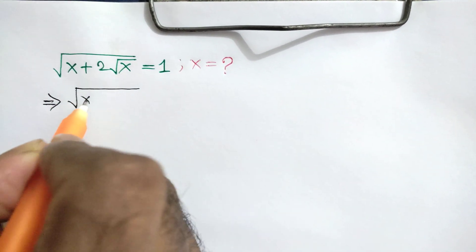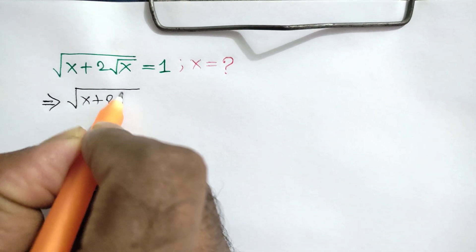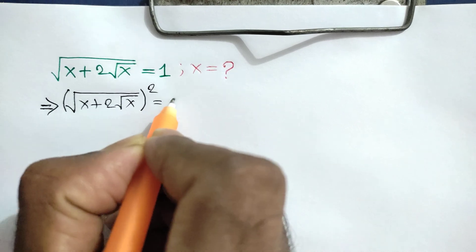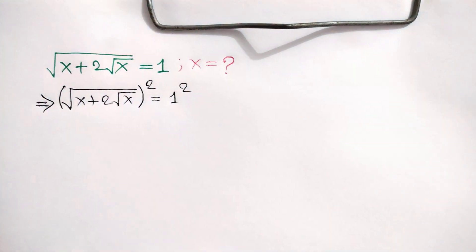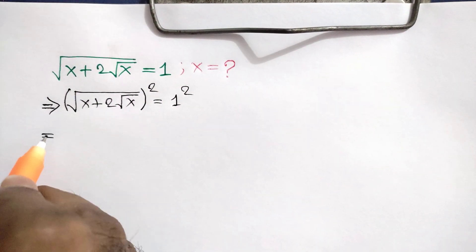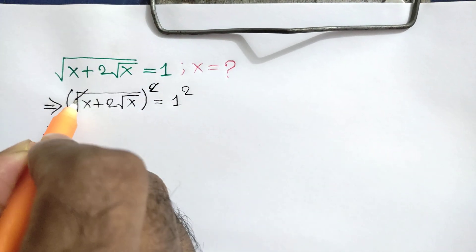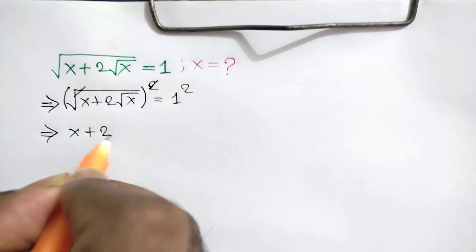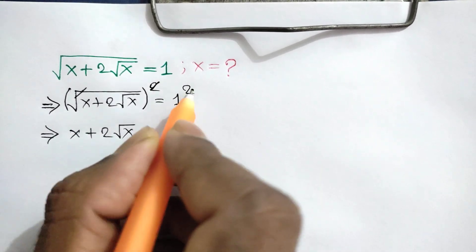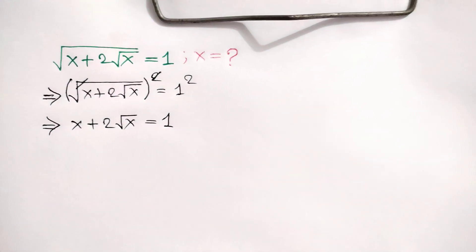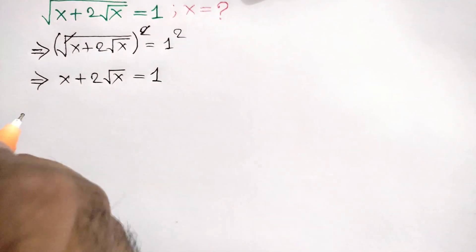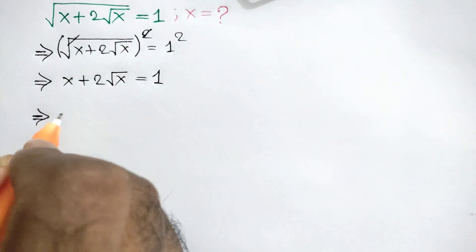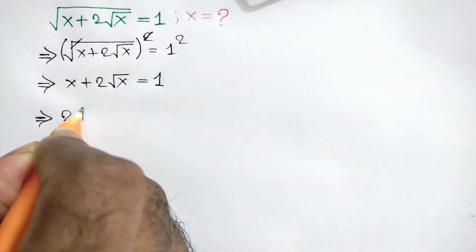Square root of x plus 2 times square root of x, whole square, is equal to 1 square. This square cancels this square root, so here we will get x plus 2 times square root of x is equal to 1.